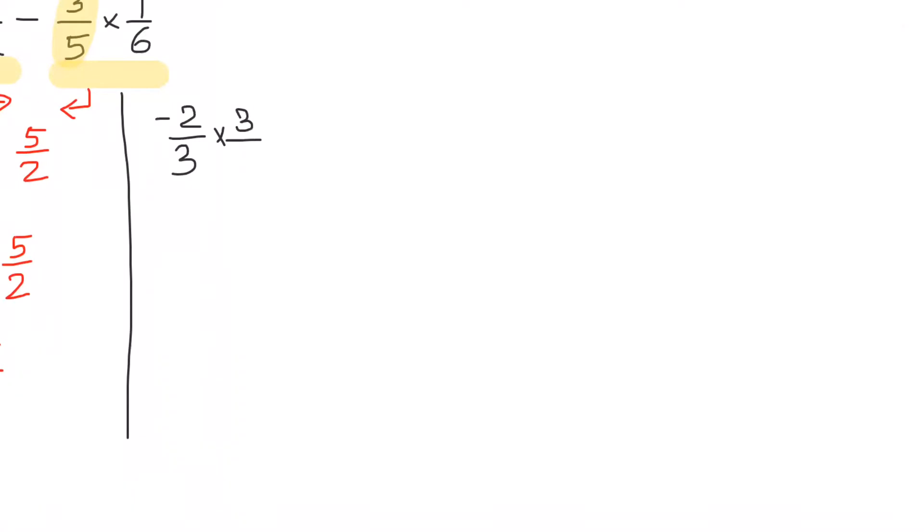Then plus five upon two as it is, then again you multiply three upon five into one upon six. So three and three cancel, minus two upon five plus five upon two as it is.